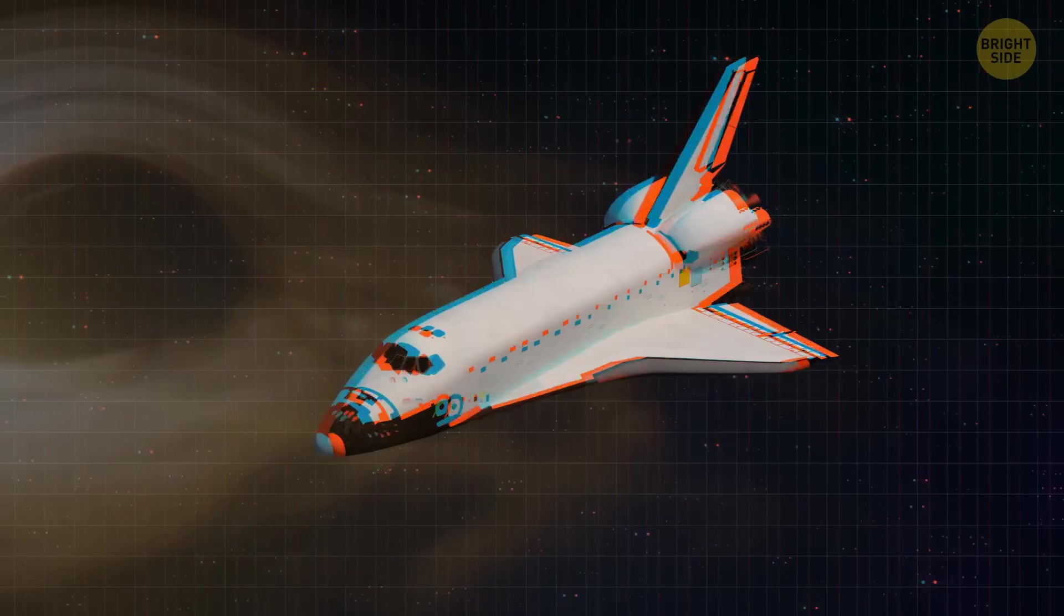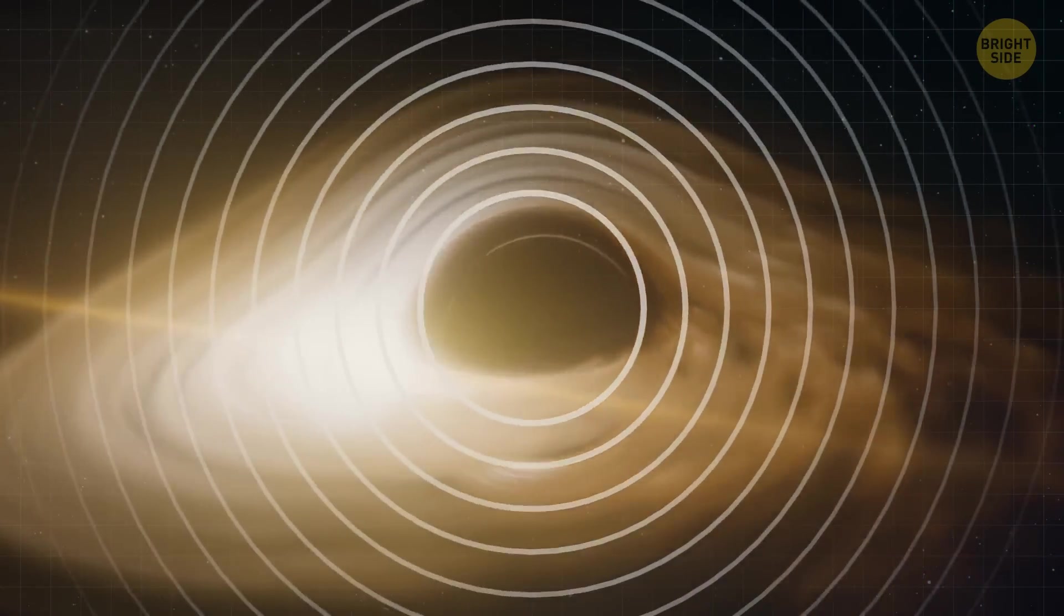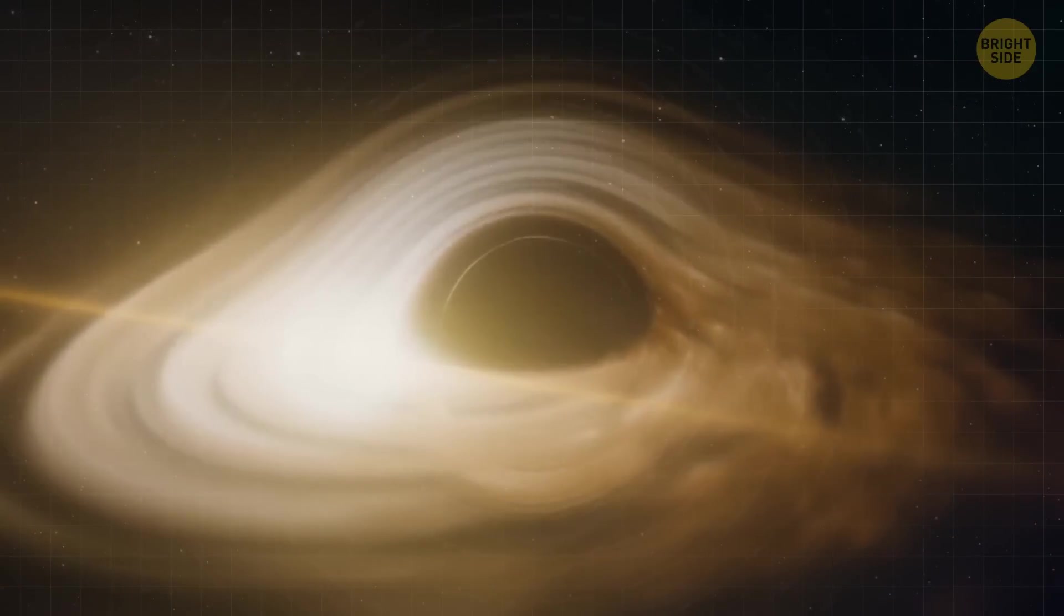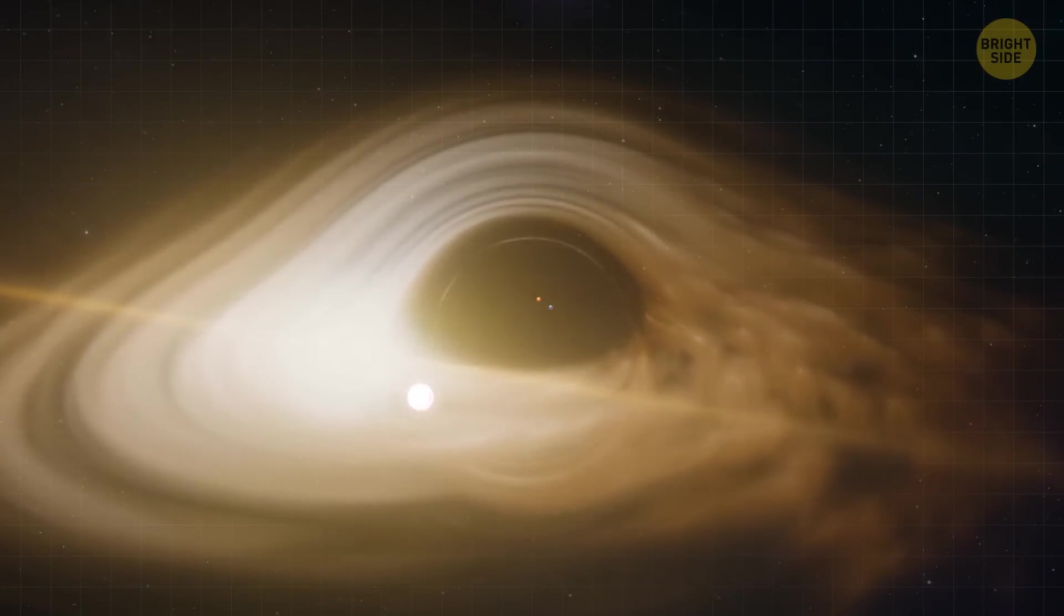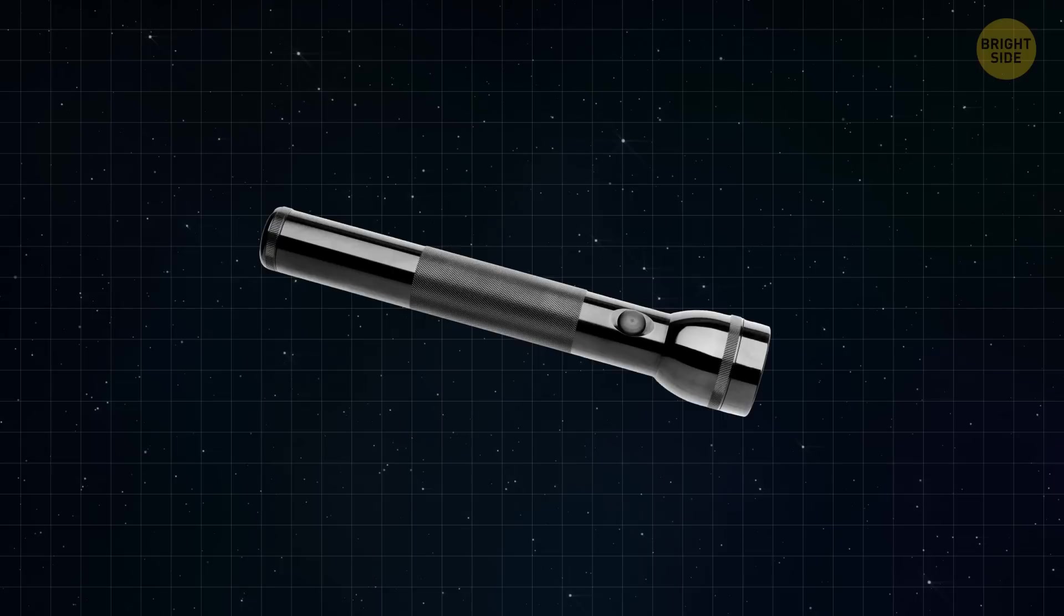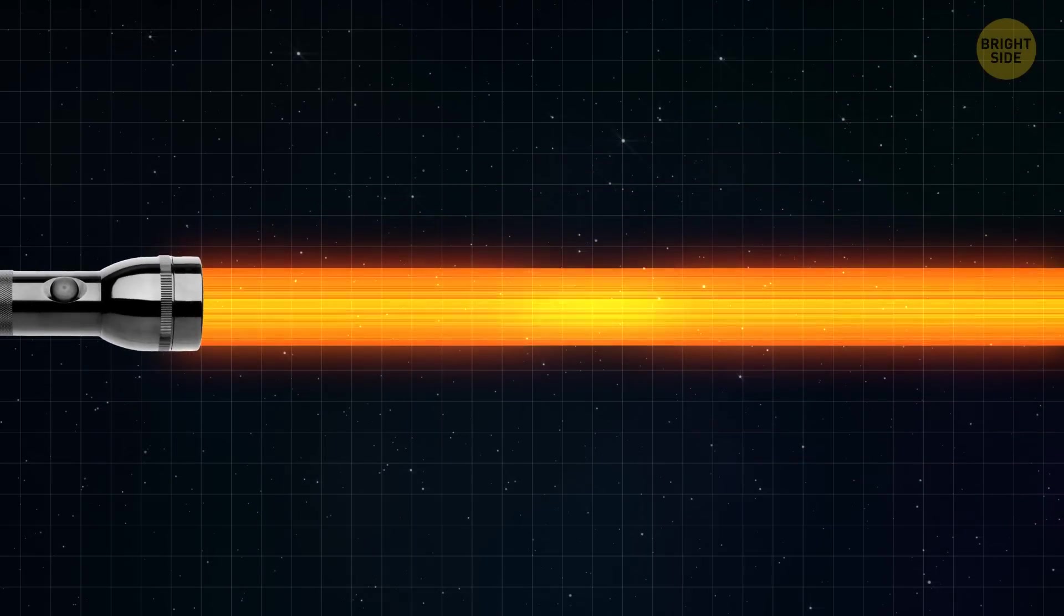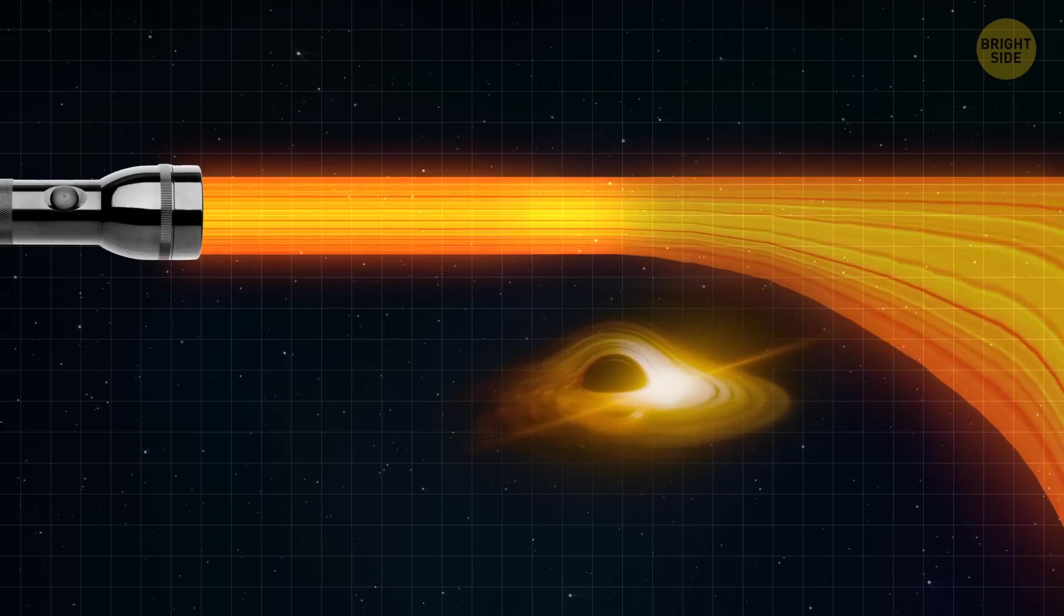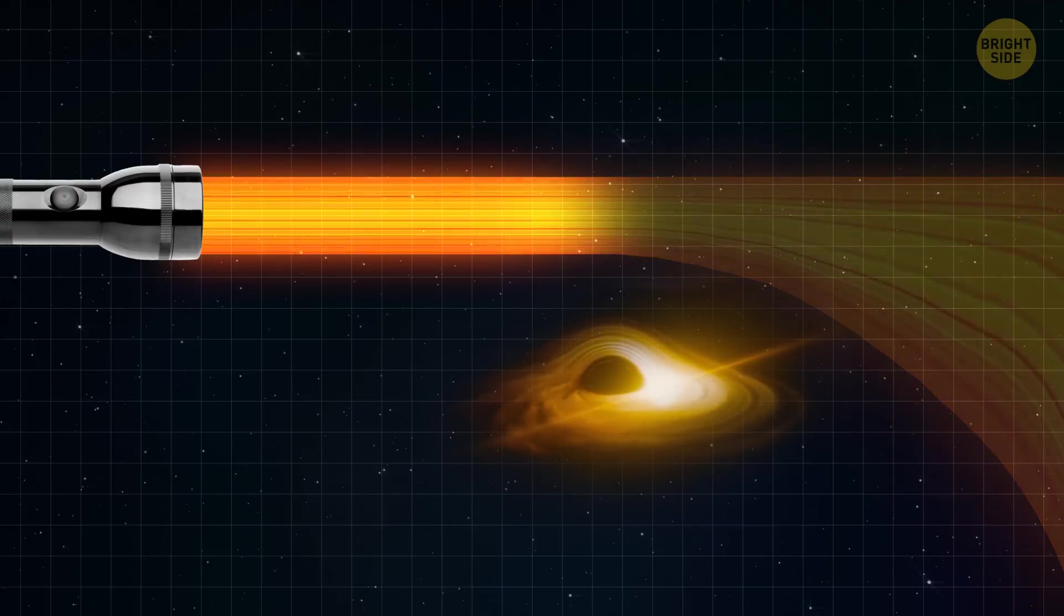First, the color of the spaceship will change. You see, the gravity near a black hole is incredibly strong, much stronger than anything we experience here on Earth. This intense gravity affects everything around it, including light. Now, light has this fascinating property where it carries energy. But when light gets close to a black hole, the powerful gravitational pull starts sapping away its energy, kind of like stealing it, making light weaker.